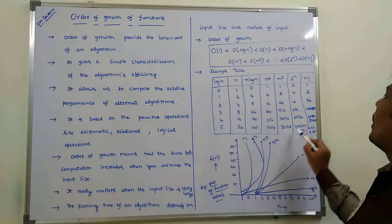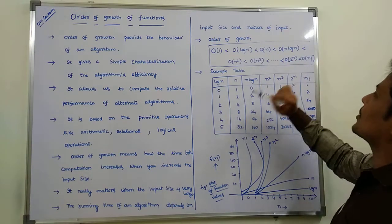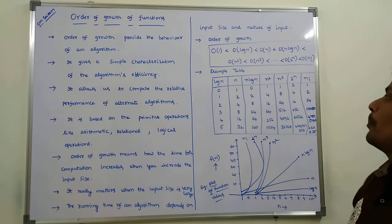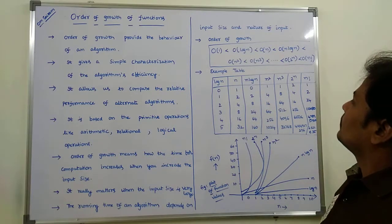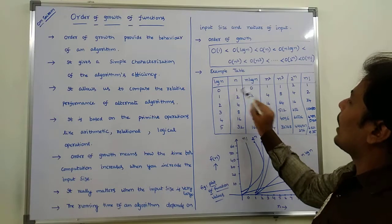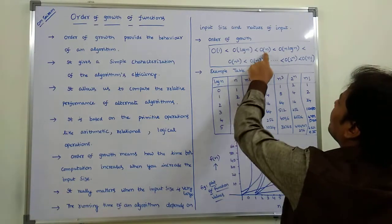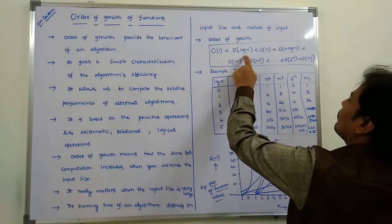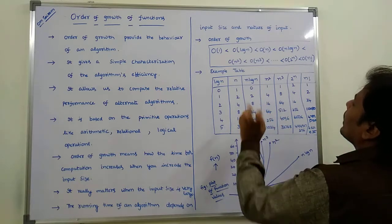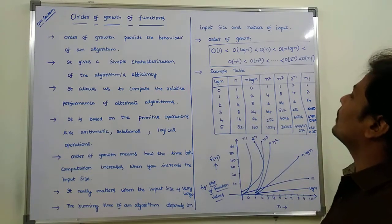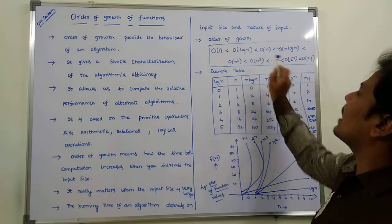We can verify this using an example table. Suppose n = 1: O(log n) = 0 and n = 1, so 0 < 1, confirming O(log n) < O(n). For n = 4: O(log n) = 2 and n = 4, so 2 < 4 — condition proved. Also, n log n = 8 and n = 4, so 4 < 8, confirming O(n) < O(n log n) — condition proved.